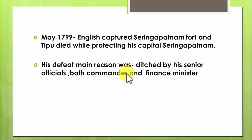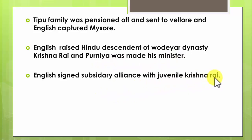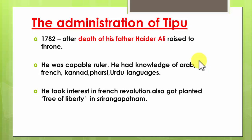The main reason for Tipu Sultan's defeat was that he was betrayed by his own senior officials, commanders, and finance minister, preventing him from mounting strong resistance. Tipu's family was pensioned off and sent to Vellore. The English captured Mysore and placed a juvenile boy of the Wodeyar family on the throne, imposing subsidiary alliance on him. Krishna Rai and Purnia — officials who had betrayed Tipu Sultan — were made his ministers.